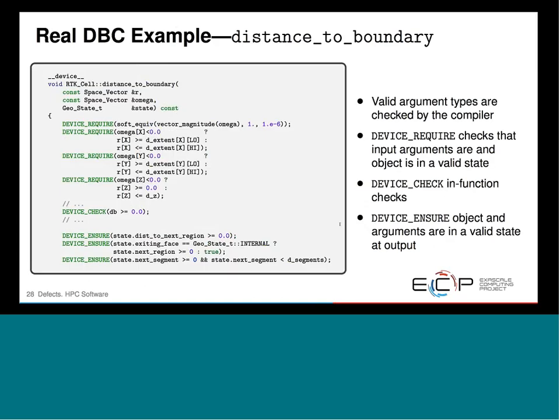What does a real example look like? Going back to our distance-to-boundary example from tracking through geometry — this is the device implementation of the distance-to-boundary function. It takes a spatial vector, a directional vector, and a state. The first thing we do is check that the directional vector is a unit vector — one of the requirements is that it does not take an unnormalized direction vector. It checks that the magnitude of that vector is within one to within some tolerance.